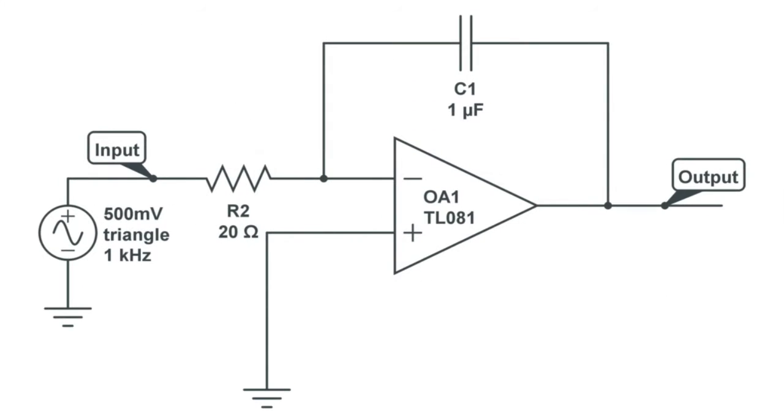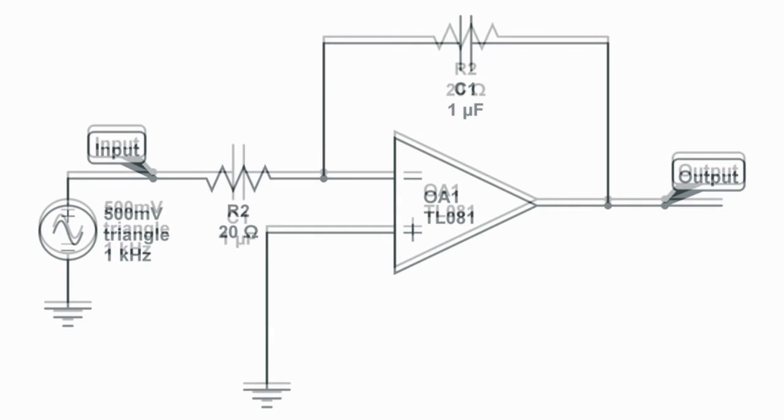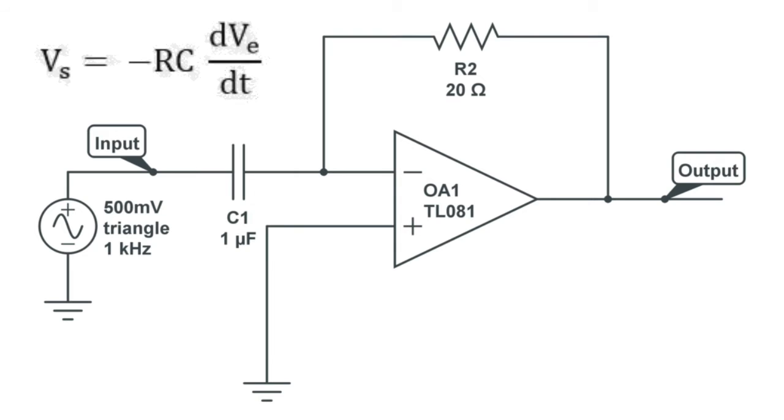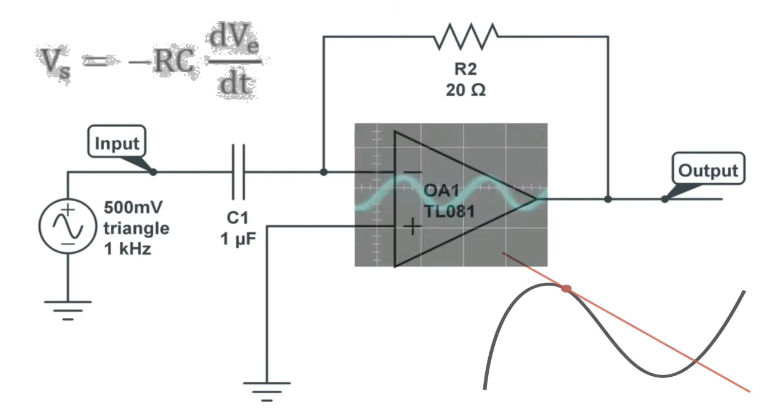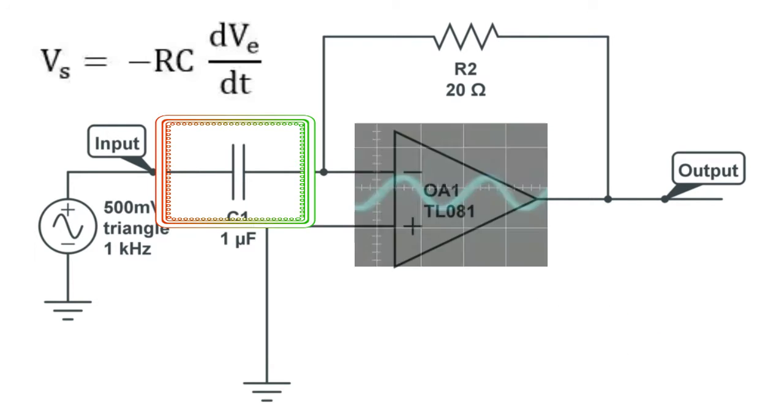The differentiator works similarly to the integrator by swapping the capacitor and the resistor. The differential op-amp configuration produces an output voltage that is proportional to the rate of change of the input voltage by measuring the current through a capacitor.